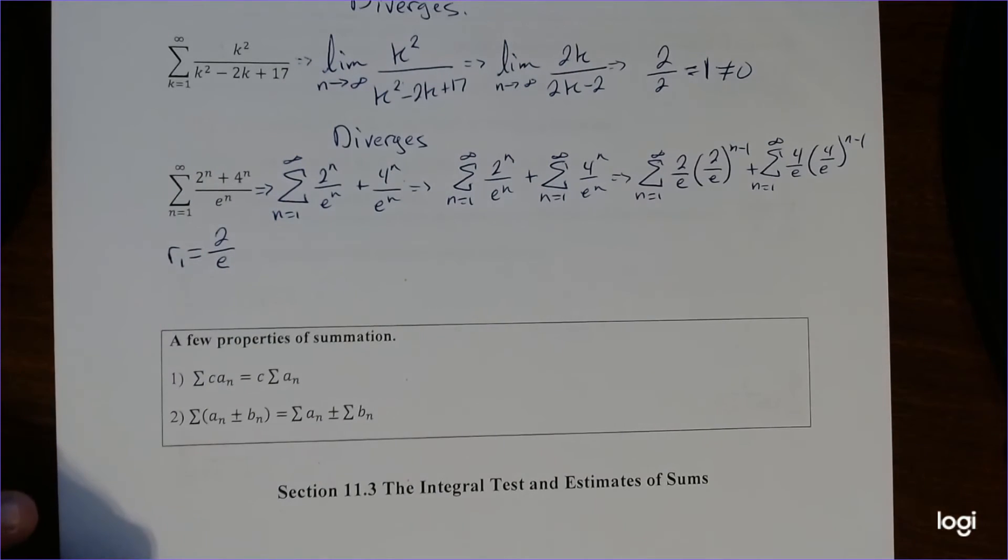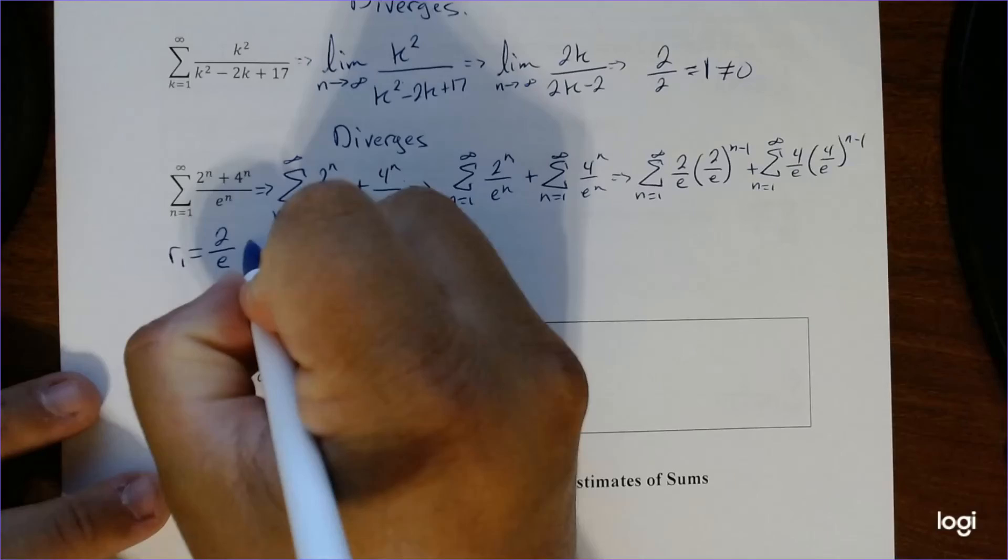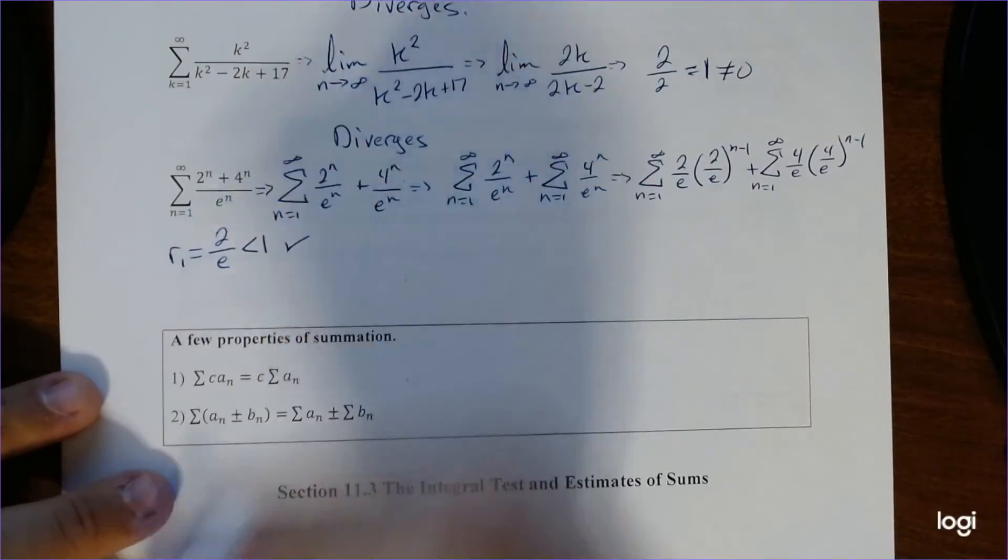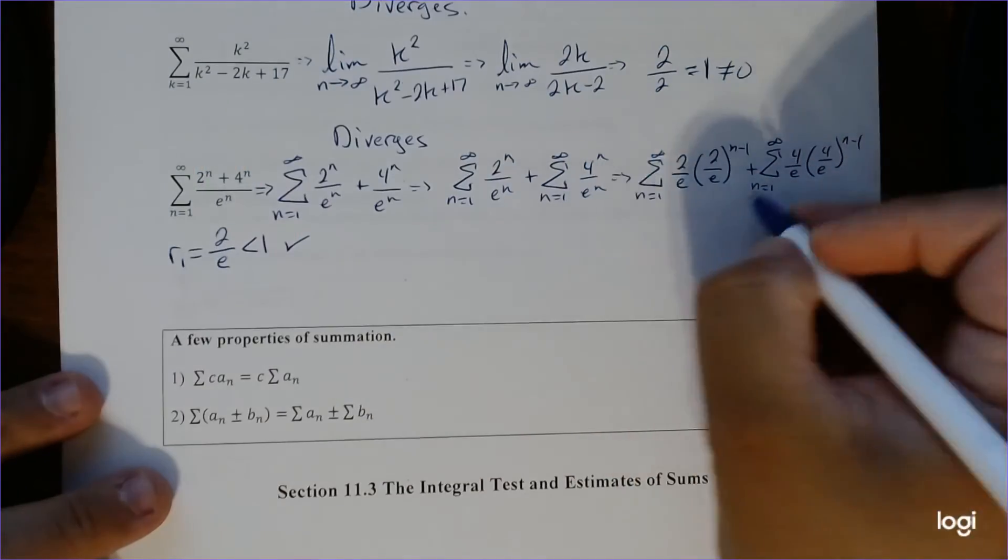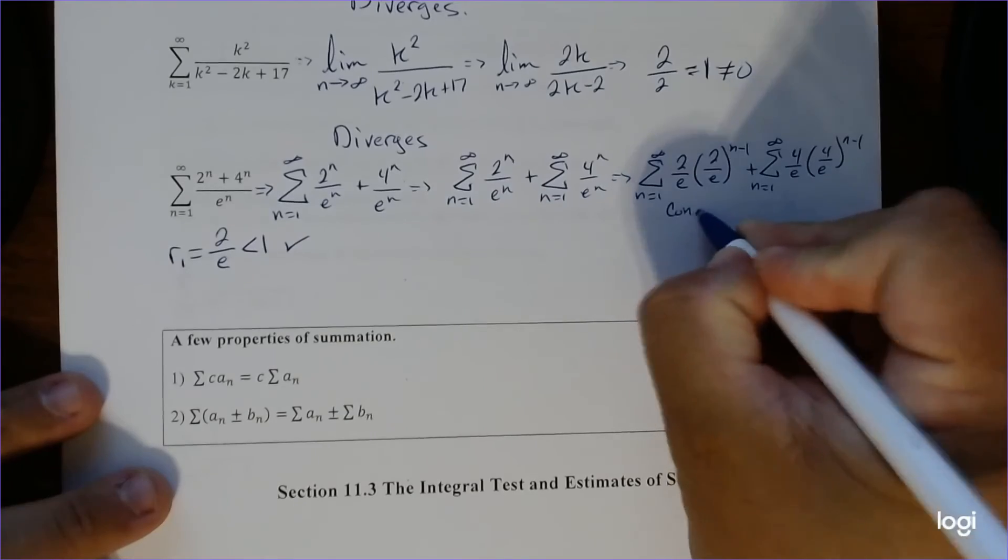And this, you can use your calculator if you're not sure what e is. E is approximately 2.7 something. So 2 divided by 2.7 something is actually less than 0, so that works out. So check. So that converges. So this one converges. So we know that for sure.